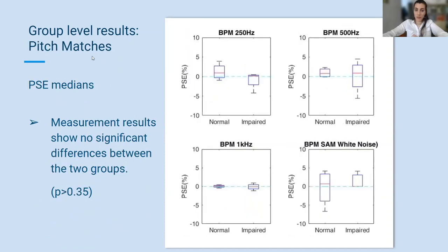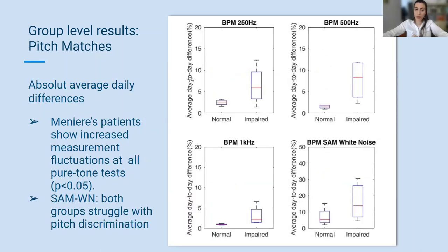Contrary to intensity matching results, pitch perception doesn't seem to show significant differences between the two groups. However, moving on to the absolute average daily differences, the clinical picture of Meniere's disease patients is here clear. Regarding the results of the SAM noise test, the y-axis is set to 50% and daily differences of both groups are increased, reflecting the difficulty of all subjects in perceiving the beats of this kind of sound. The fluctuation of the Meniere's patients' results is closer to the normal hearing group at this test compared to the 250 Hz test.